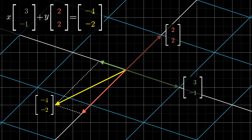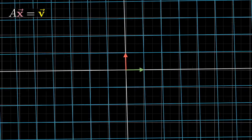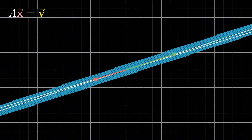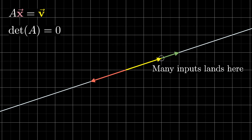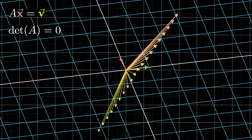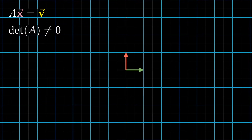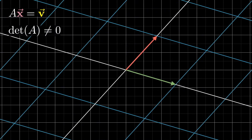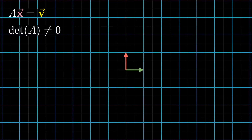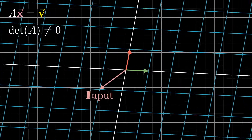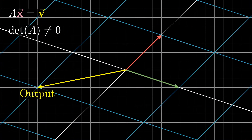The type of answer you get here can depend on whether or not the transformation squishes all of space into a lower dimension — that is, if it has a zero determinant. In that case, either none of the inputs land on our given output, or there's a whole bunch of inputs landing on that output. But for this video, we'll limit our view to the case of a non-zero determinant, meaning the outputs of this transformation still span the full n-dimensional space that it started in. Every input lands on one and only one output, and every output has one and only one input.